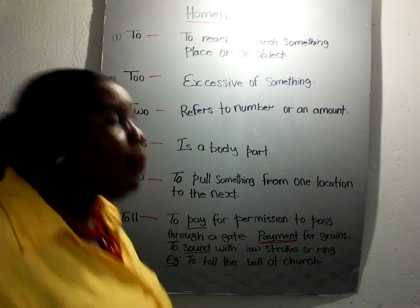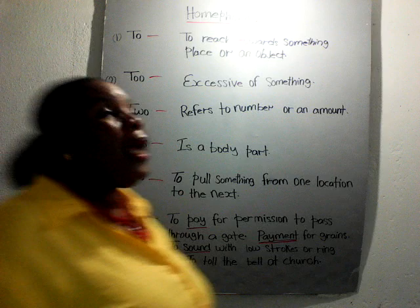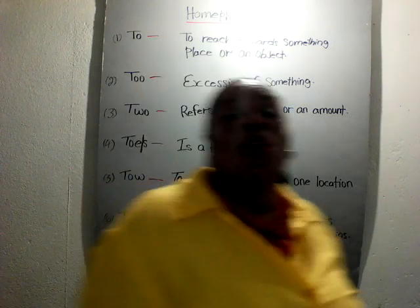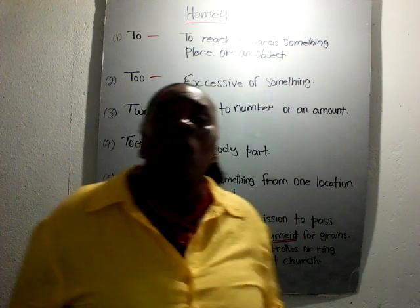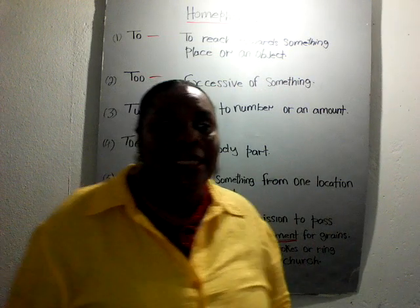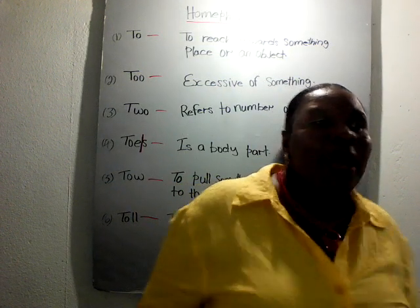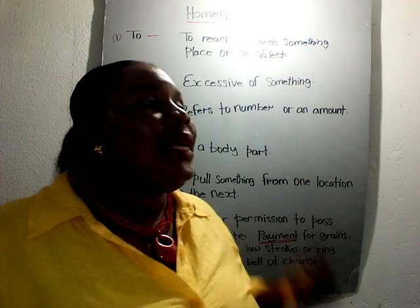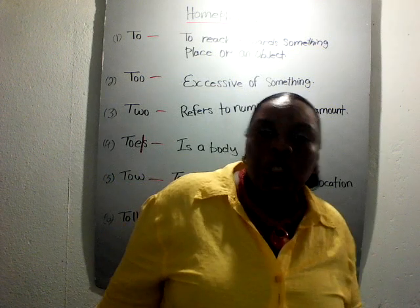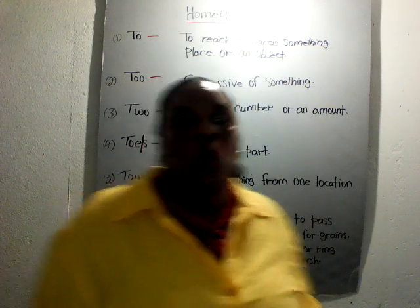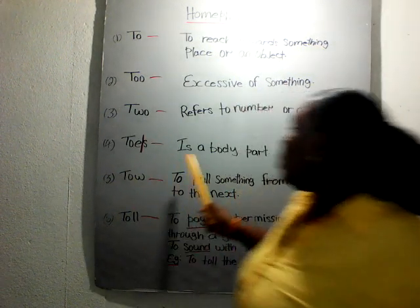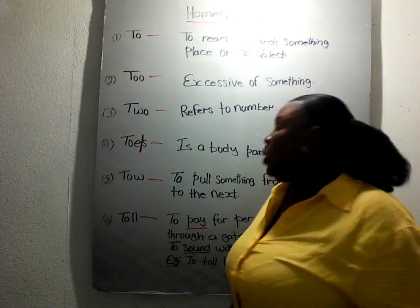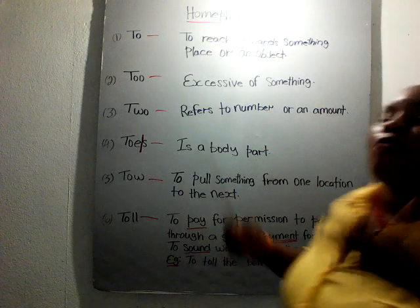'Toe' is a body part. For example: the doctor cuts off three toes because John has diabetes. 'Toes' is plural while 'toe' is singular — my big toe hurts, or my pinky toe hurts.